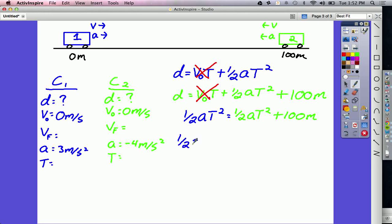So, I get 1 half AT squared minus 1 half AT squared. Remember, those don't cancel out because the A's are different numbers. This one is 3 and the green one is negative 4.